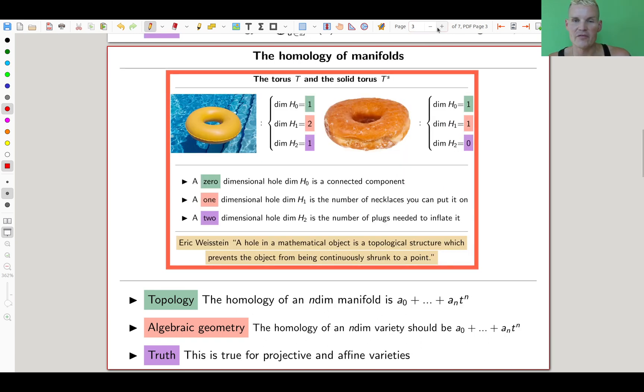For example, when you compute the homology of manifolds, arguably the most important class of topological spaces, they have an associated dimension. If you compute it for an n-dimensional manifold, it's concentrated in degrees zero to n. In other words, the associated polynomial is just a_0 up to a_n times t to the end.